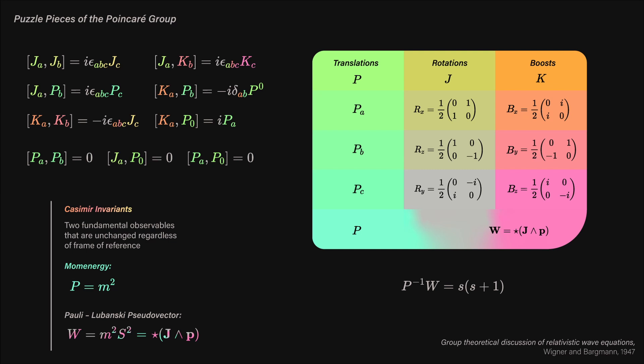The generators of translations are the respective momenta in each direction. Note that the time translator is the time momentum, which is just the energy of course, and the generators of rotation are the respective pieces of angular momenta. The boost generators are angular momenta also, but in the frame where time is also an axis.